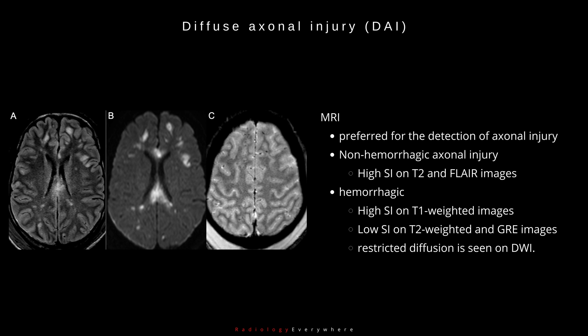MRI is preferred for the detection of axonal injury. Non-hemorrhagic axonal injury is hyperintense on T2-weighted and FLAIR images. When hemorrhagic, axonal injury is hyperintense on T1-weighted images and hypointense on T2-weighted and T2-star weighted gradient recalled echo (GRE) images.